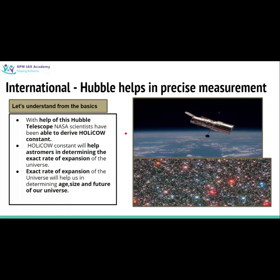Physicists believe that with the help of this Hubble constant, the exact rate at which our universe is expanding can be estimated. With knowledge of the exact rate of expansion of the universe, scientists can also determine the overall age of our universe — the 13.8 billion years figure is just an estimation, but once we know the precise rate of expansion, we can also determine the exact age, size, and future shape of our universe.